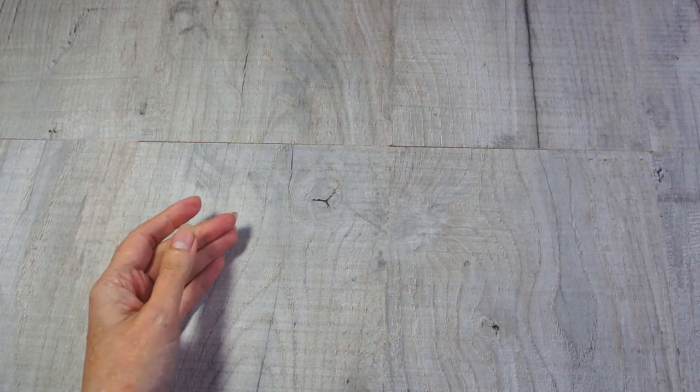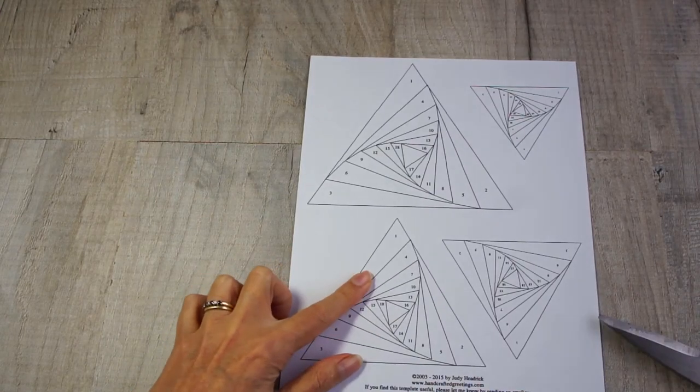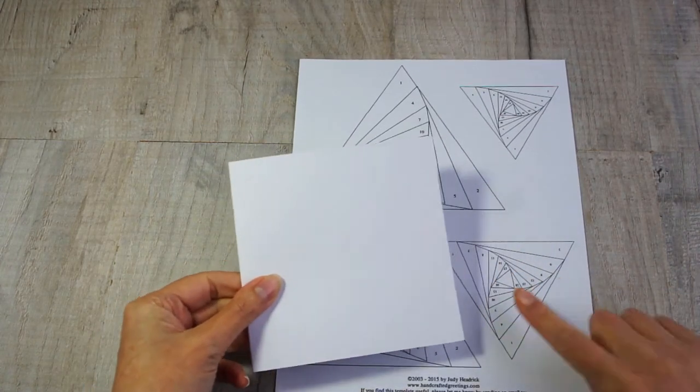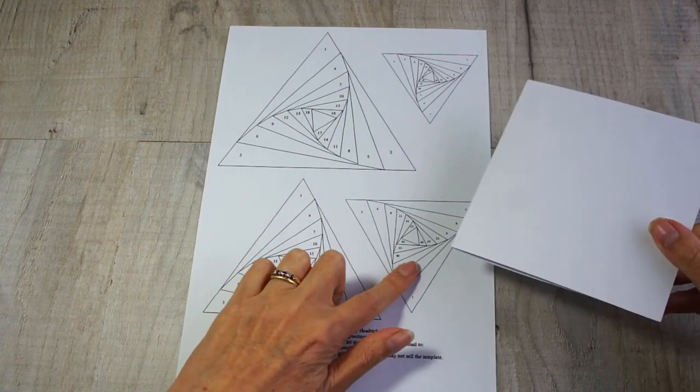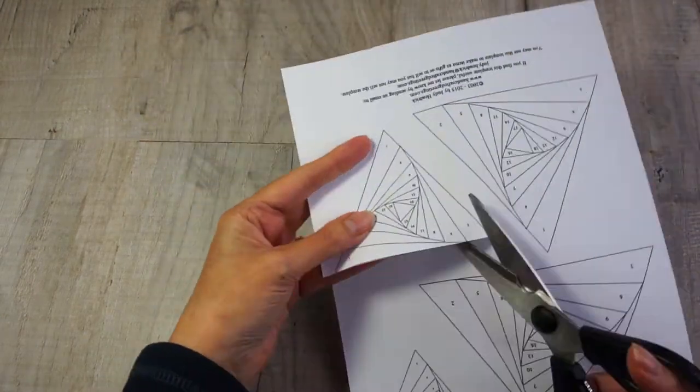So let's get started. You're going to take one of your sheets with your designs on and decide which one you want. Now I think I want that larger triangle, but now I'm looking at it against my card. I think the smaller one's probably better. So for one sheet, cut out the design.